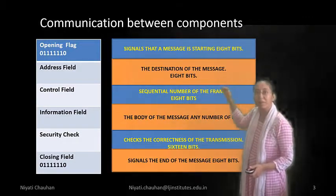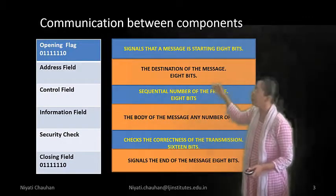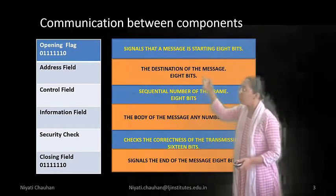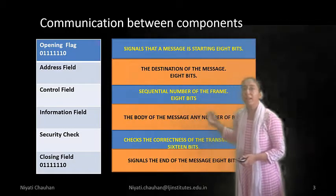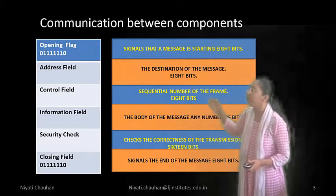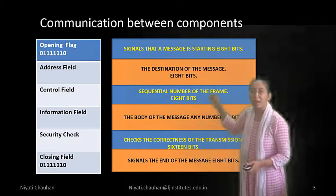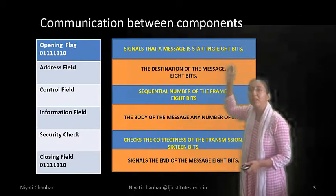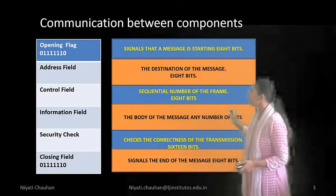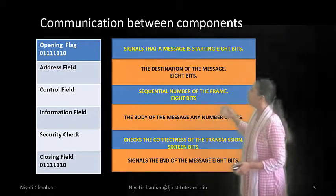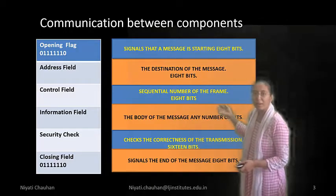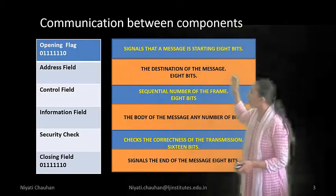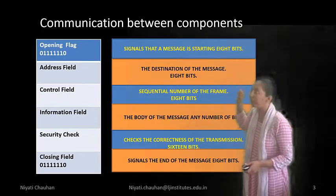Next we discuss how to send our data in message form. First, the opening flag. In the opening flag, we send our data in the form of binary pattern, which signals that a message is starting — 8-bit. Our message is sent in binary form. Then the address field: the destination of the message is 8-bit.